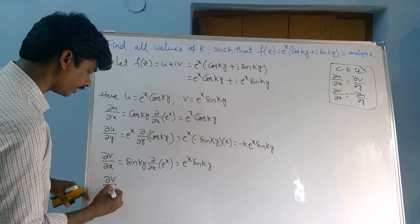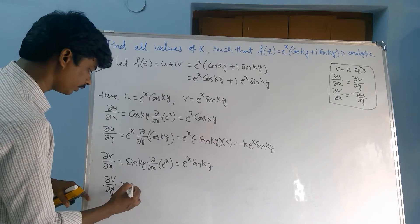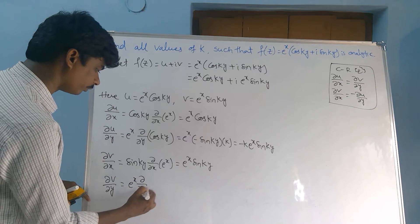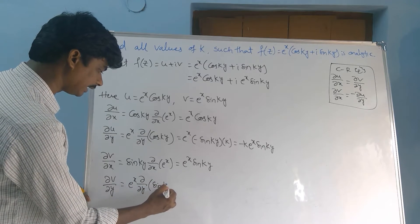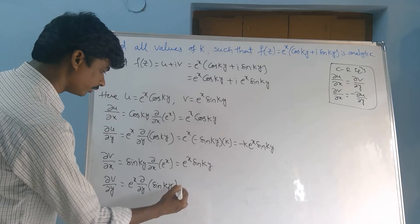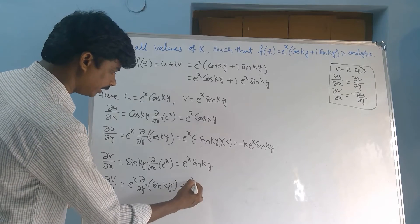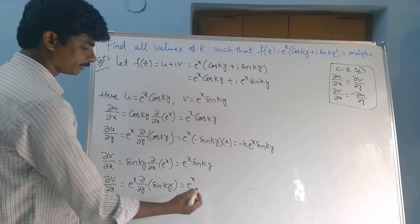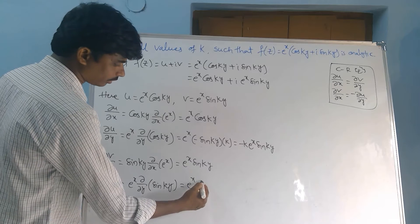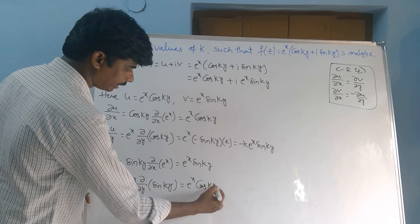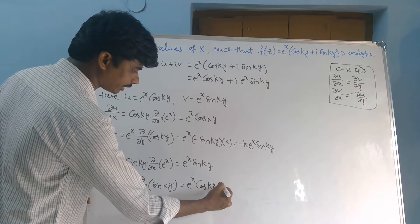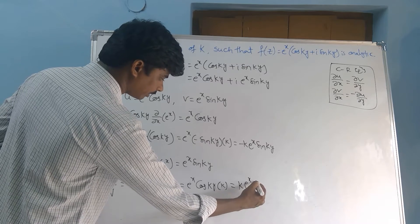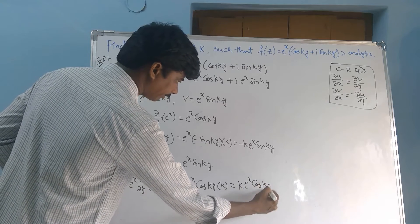Next, ∂v/∂y: we have e^x · d/dy(sin(ky)). Since d/dx(sin x) = cos x, we get cos(ky), and the inner derivative is k. Therefore ∂v/∂y = k · e^x · cos(ky).